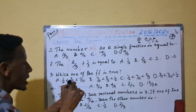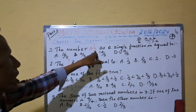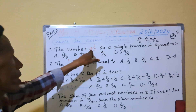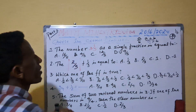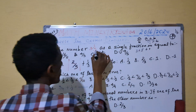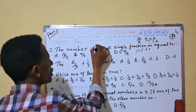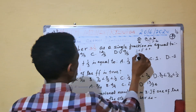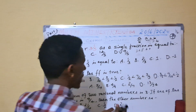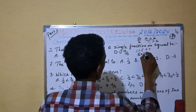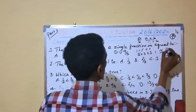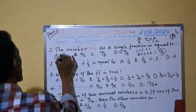For question one, when we convert the mixed number to an improper fraction, we do: 5 times 3 plus 1 — that is 15 plus 1, which is 16 over 5. So 16 over 5 is the answer, which is option A.